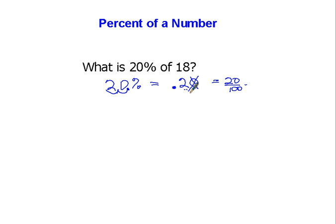In this case, that zero is meaningless because it's dangling out there by itself on the edge. And so now I'm going to do 18 times 0.2.